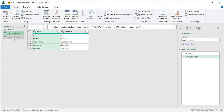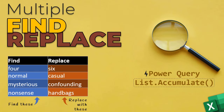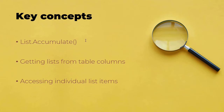So we now have two tables. To understand this technique, we need to learn three different concepts: what List.Accumulate is, how to get lists from table columns, and how to access individual list items. We will combine all three to arrive at the solution.